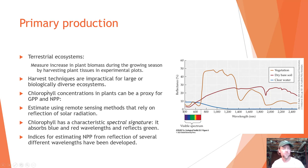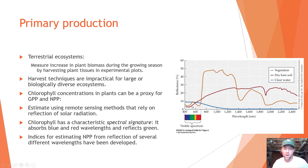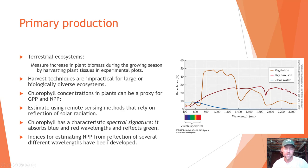Chlorophyll concentrations in plants can serve as a proxy for GPP and NPP, getting around the limitations of harvest methods. These can be estimated using remote sensing methods that rely on the reflection of solar radiation. Chlorophyll has a very characteristic spectral signature — it absorbs blue and red wavelengths and reflects green. You can see in the figure that vegetation shows low reflectance in the blue and red wavelengths but high reflectance in the green wavelength, which is why plants look green. This signature is distinct from surrounding soil and ground and allows us to develop indices for estimating NPP.